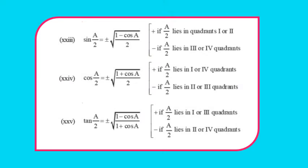Next we have half-angle formulas. sin(A/2) = ±√((1 − cosA)/2). We take positive if A/2 lies in the first or second quadrant, and negative if A/2 lies in the third or fourth quadrant. cos(A/2) = ±√((1 + cosA)/2), positive if A/2 lies in the first or fourth quadrant, negative in the second or third. tan(A/2) = ±√((1 − cosA)/(1 + cosA)), positive if A/2 is in the first or third quadrant, negative if in the second or fourth. Pause and note down these identities.